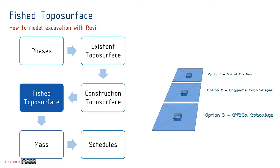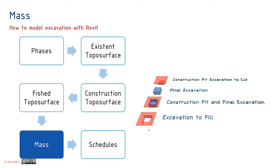After we finish our project, we fill up the construction pit with some ground or soil and get the final result. For comparing results, I created mass objects with idealized shapes — one provides the construction pit excavation cut, another is the final excavation, and combining them gives the excavation to fill. In the beginning of construction I should create the cut, and at the end I fill up this volume; the final cut-out for my project is the final excavation.